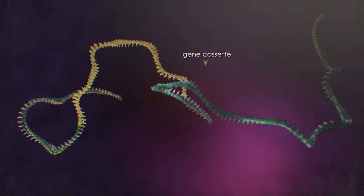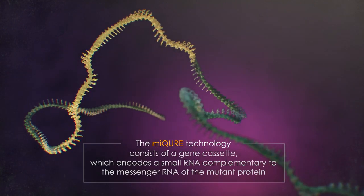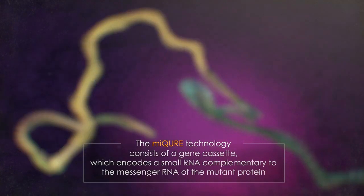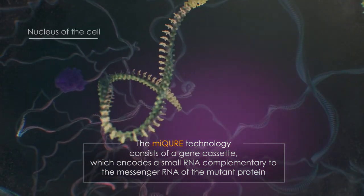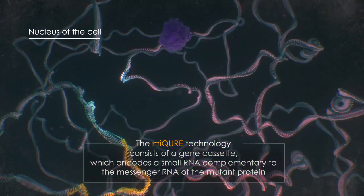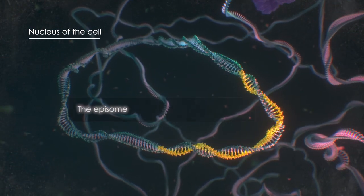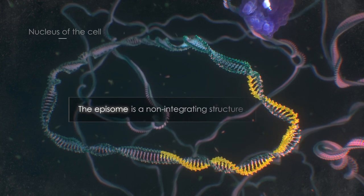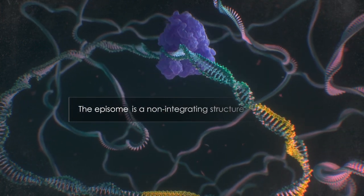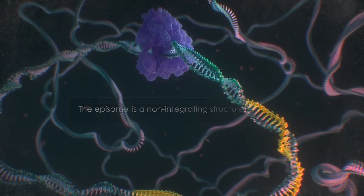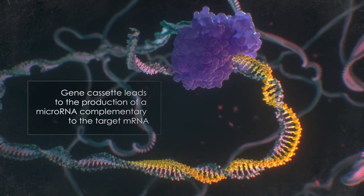AAV-based vectors carry the therapeutic genetic material to target cells. Following a single dose, the gene cassette forms an episome from which the cell can repeatedly express the microRNA that will inhibit translation of the toxic protein.